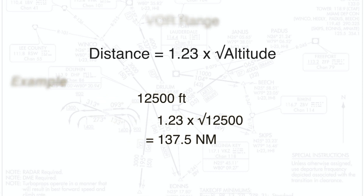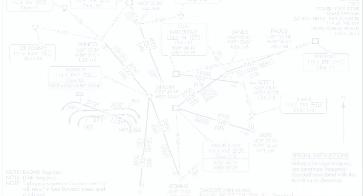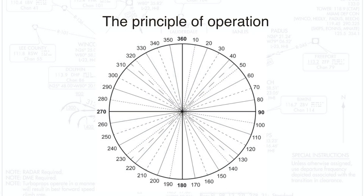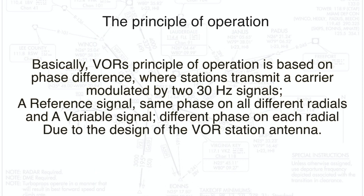Now let's look at the principle of operation of a VOR. VOR stations send off signals in 360 degrees, hence the name omnidirectional. The VOR principle of operation is based on phase difference, where the station transmits a carrier modulated by two 30 Hz signals: a reference signal — same phase on all radials — and a variable signal — different phase on each radial — due to the design of the VOR station antenna.